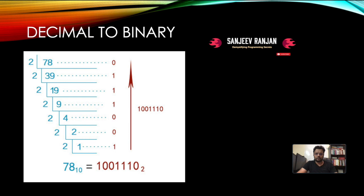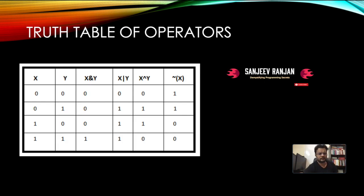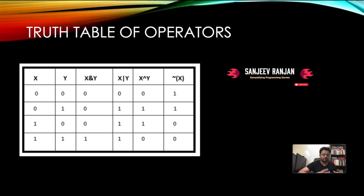Now that you understand binary digits, note that in computer language, everything happens in binary — zeros and ones. Everything gets converted to binary and operators work on them to give results. There are basic operators you need to be familiar with. If you come from an electronics background and know logic gates, these will be familiar. The main ones are AND, OR, XOR, and NOT (negation), shown with their permutations of 0 and 1.